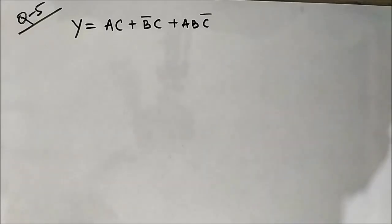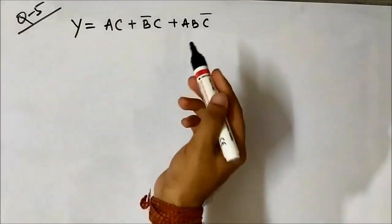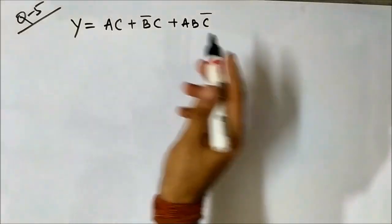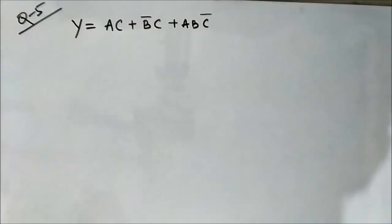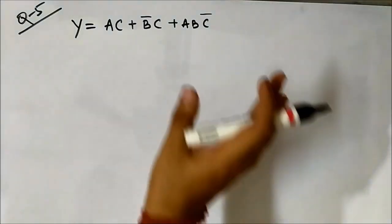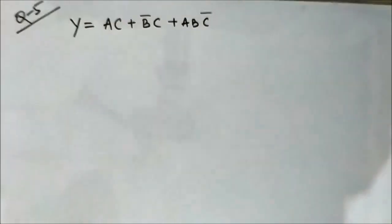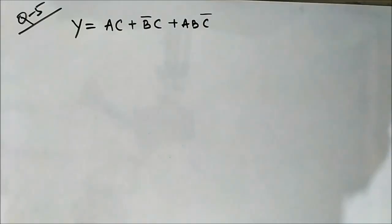Hello friends, welcome to engineering tutorial. Here we have another question where we have to implement a Boolean expression using NOR gates.